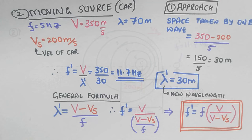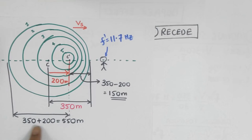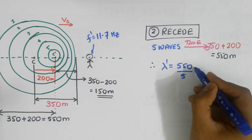Okay, what would I register by standing over here? Well, the calculations are similar. From this side, the five waves take up a space of 350 plus 200 equals 550 meters, making the new wavelength, Lambda Prime, equal to 110 meters.